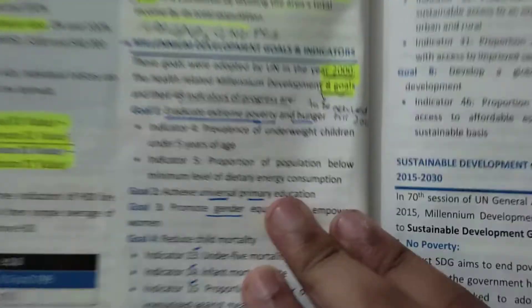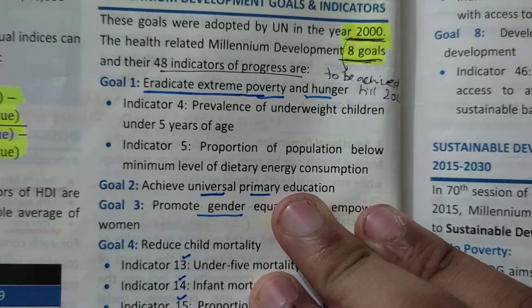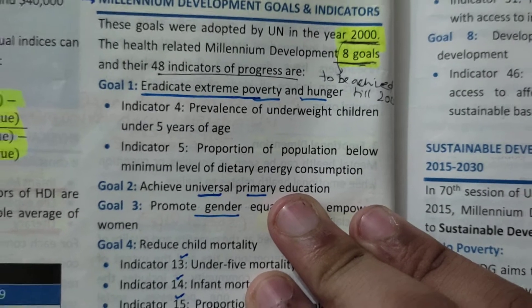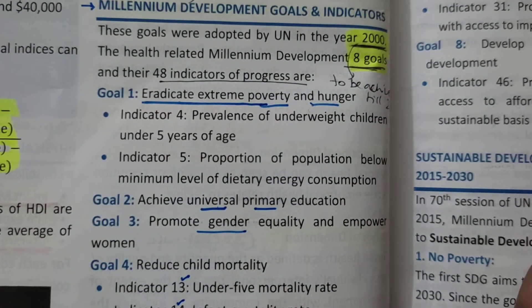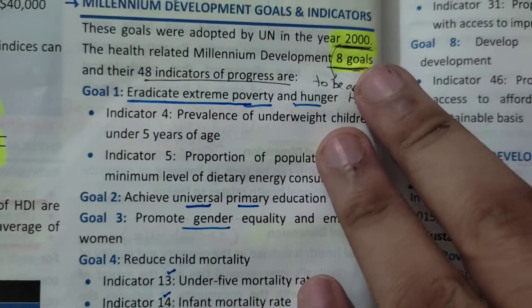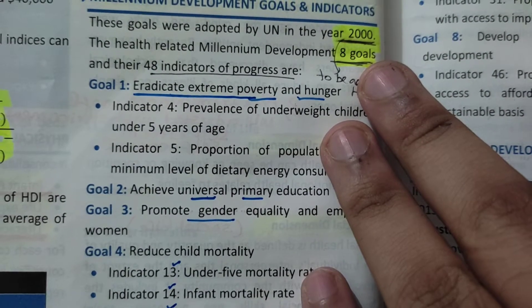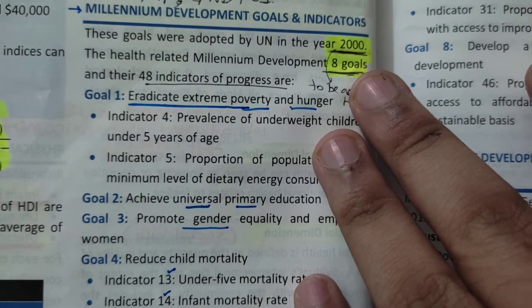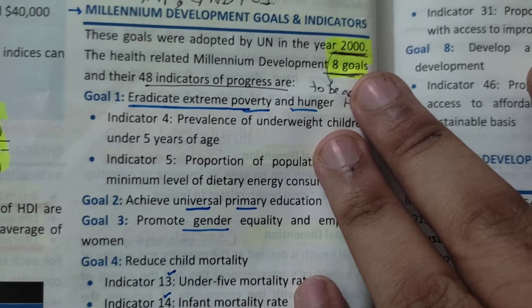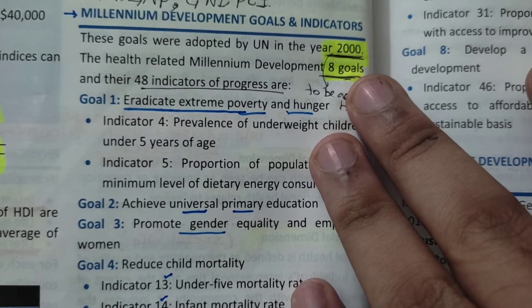Goal 1 is Eradication of Poverty and Hunger. In this case, we have two indicators: Indicator 4 and Indicator 5. Indicator 4 is mainly about children whose age is less than 5 years and they are underweight.